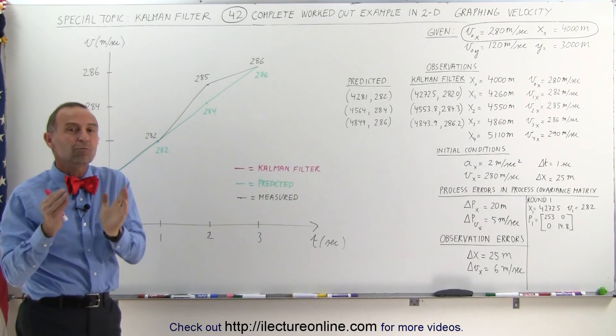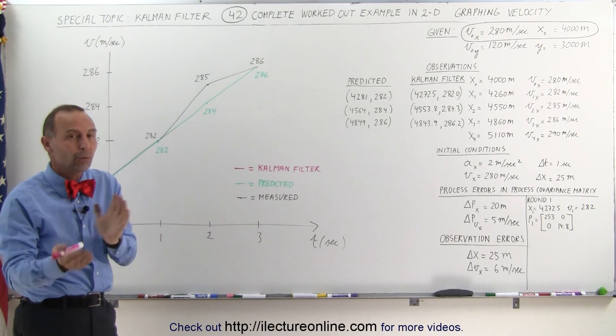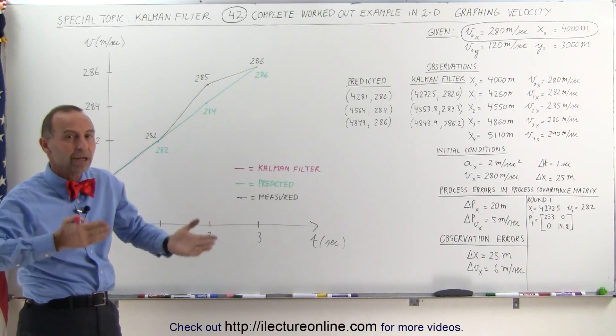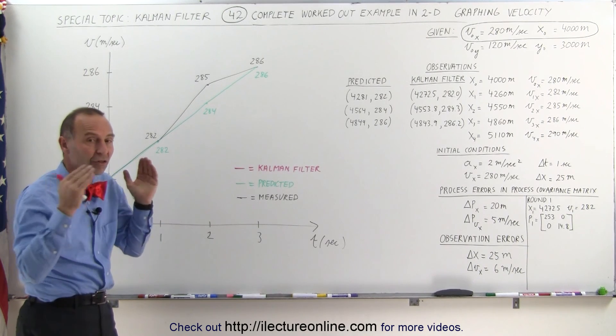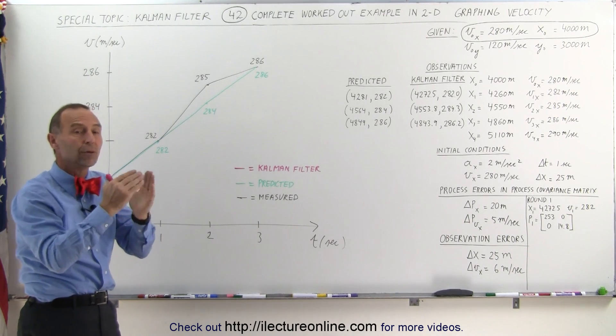But the Kelvin filter smooths that out. It puts a certain weight to the prediction, a certain weight on the measured values, depending upon how erratic they are, and it zeroes us in to a value that is more realistic.